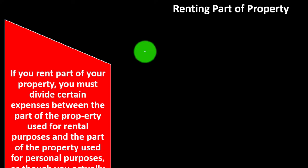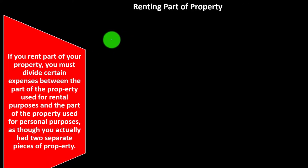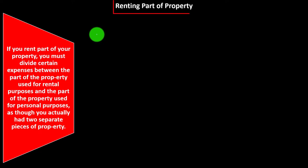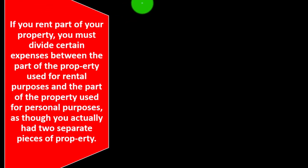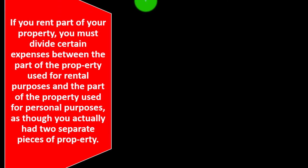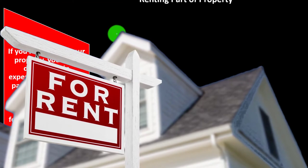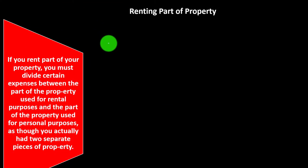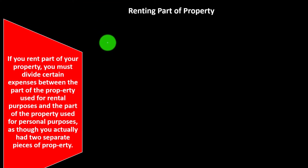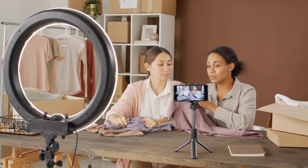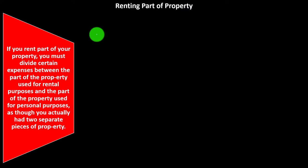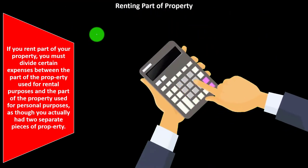We're focusing on rental real estate. If you rent part of your property, you must divide certain expenses between the part used for rental purposes and the part used for personal purposes, as though you actually had two separate pieces of property. This is an area where confusion comes into play — if you have your personal residence and rent part of it, you've got a situation similar to a business situation with mixing of business and personal.